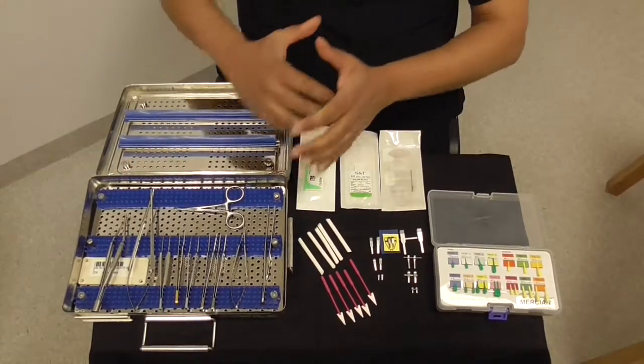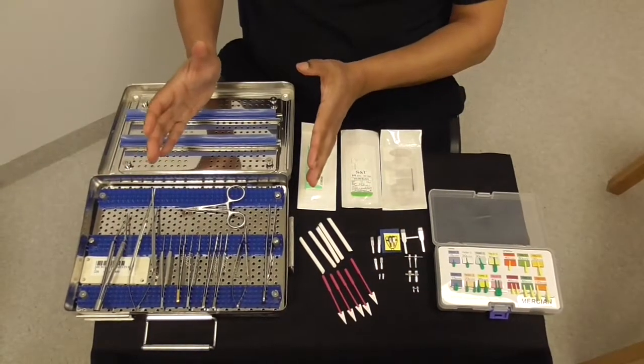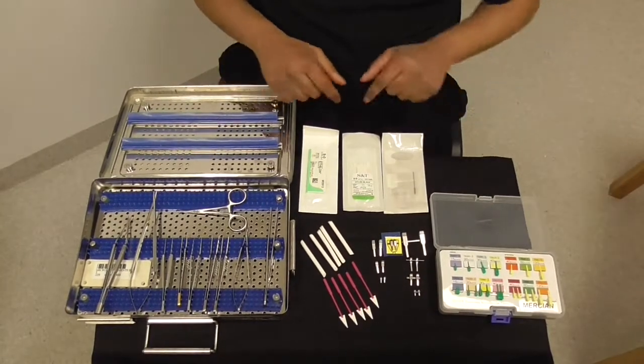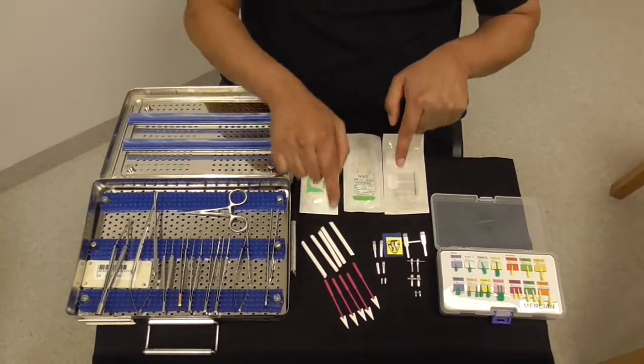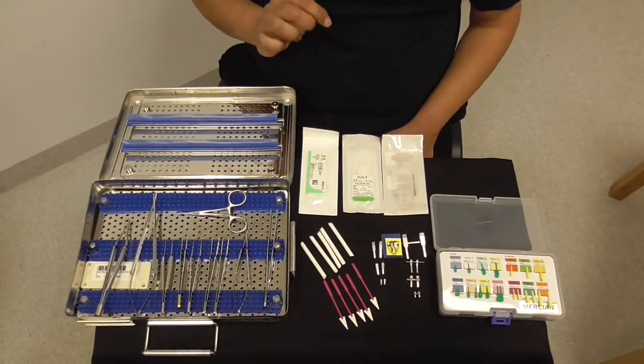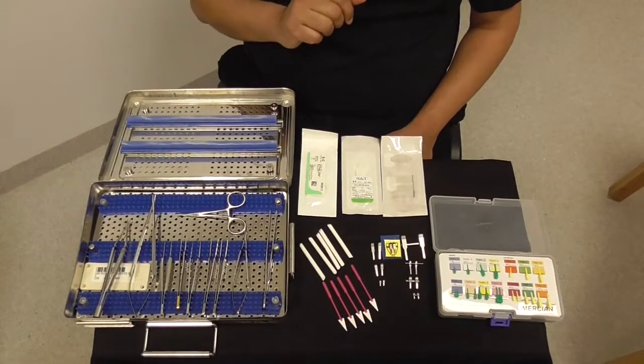The microsurgical kit involves the instrumentation here, a wide variety of clamps, sutures, and other bits and pieces that help with microsurgery. So we're going to first start off with the instruments.